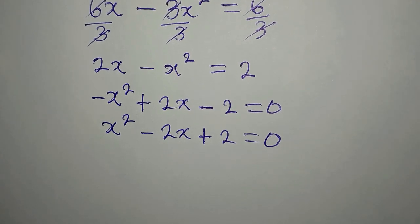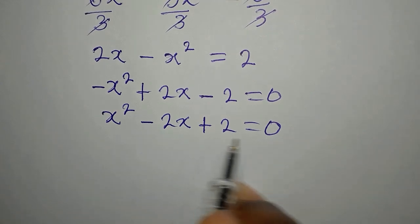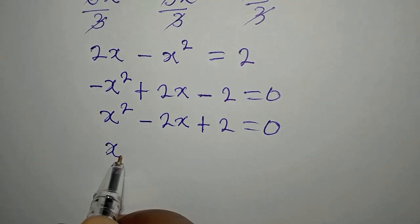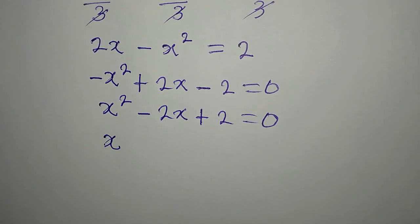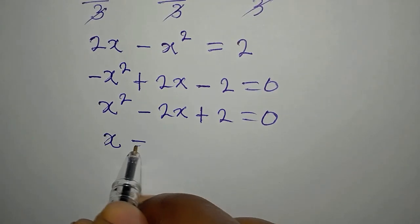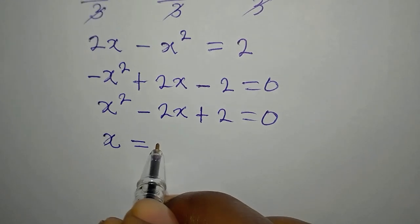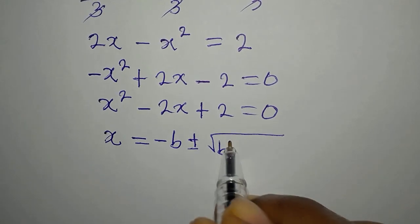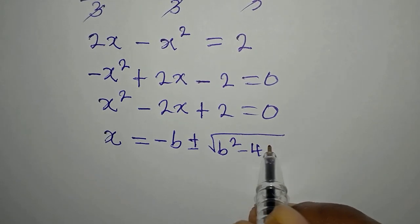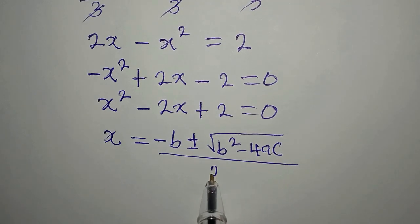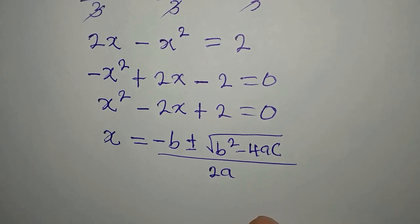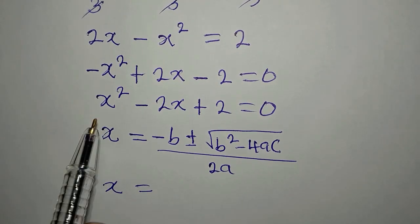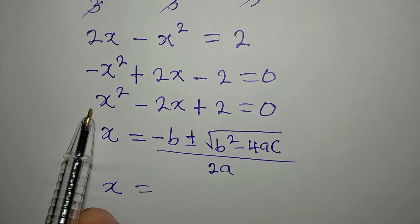We are going to use the formula method to get the value of x. Remember, this is a quadratic equation. The quadratic formula goes: x equals negative b plus or minus the square root of b squared minus 4ac, all over 2a. Our a is 1, that is the coefficient of x squared.